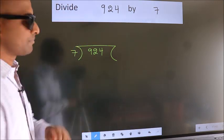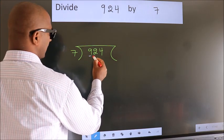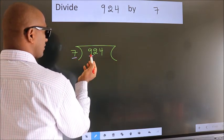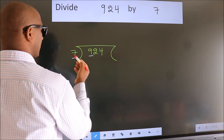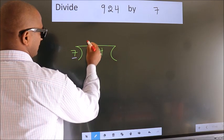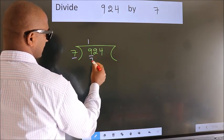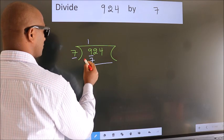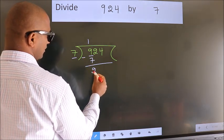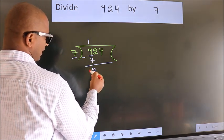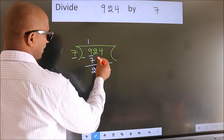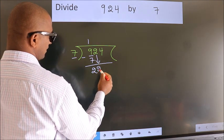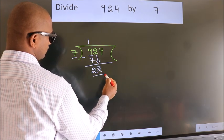Next, here we have 9, and here 7. A number close to 9 in the 7 table is 7 ones, which is 7. Now we should subtract — we get 2. After this, bring down the beside number. So 2 down, giving us 22.